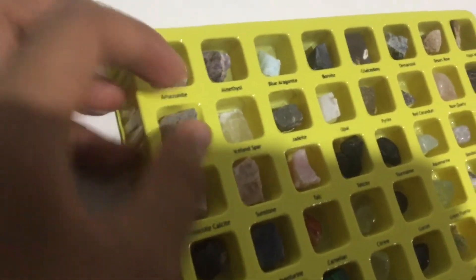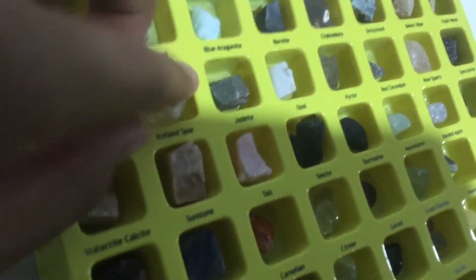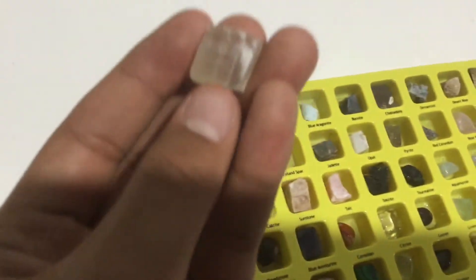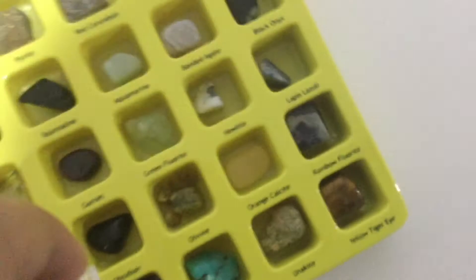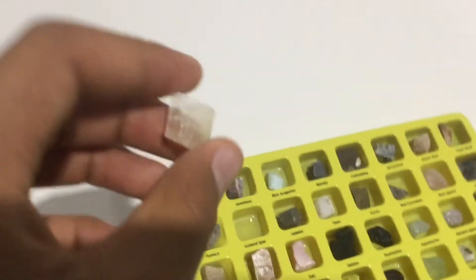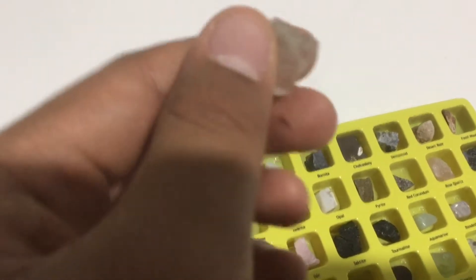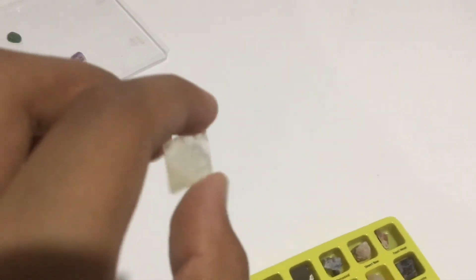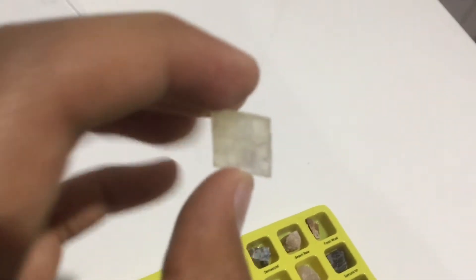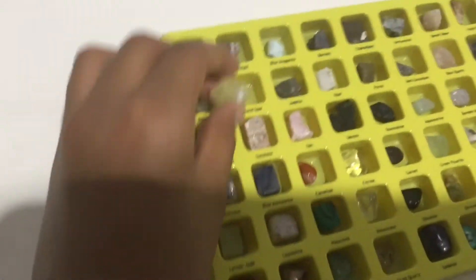This one is Iceland spar. It's a type of calcite, like that orange calcite. It's really cool. It's see-through. If I put it here, you can't really see it much, but if it's polished then you would be able to see through, but it's not. This video is all about the big ones and the ones from the gem kit and the unpolished ones. I'll do another video about the polished ones.